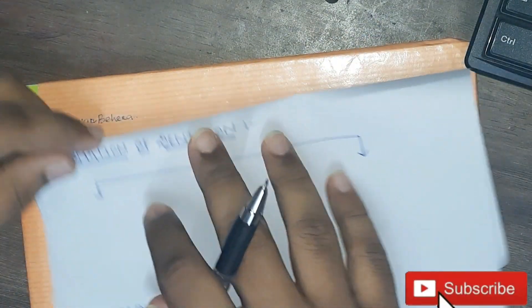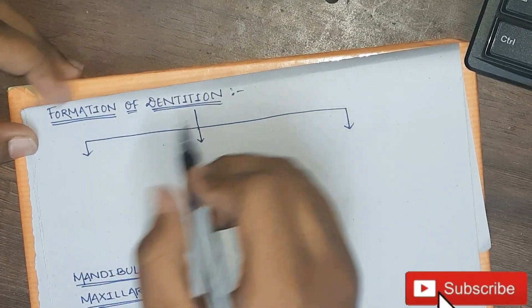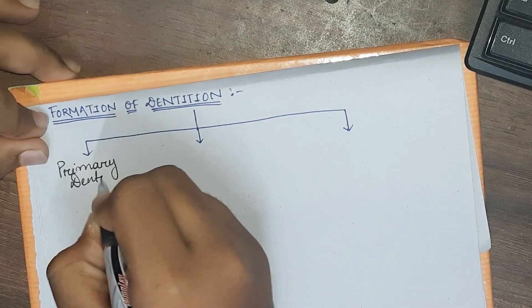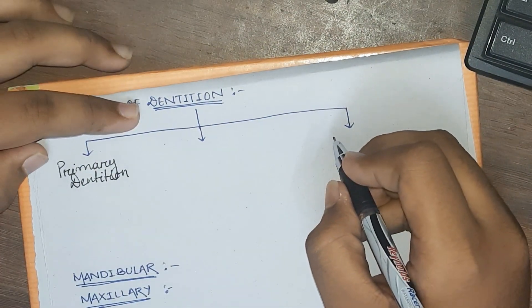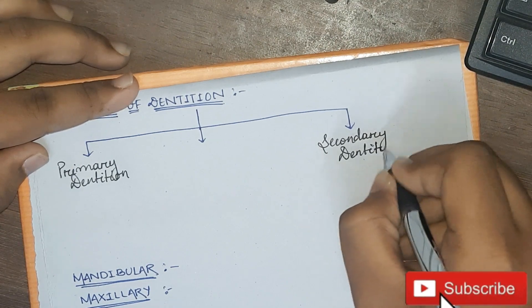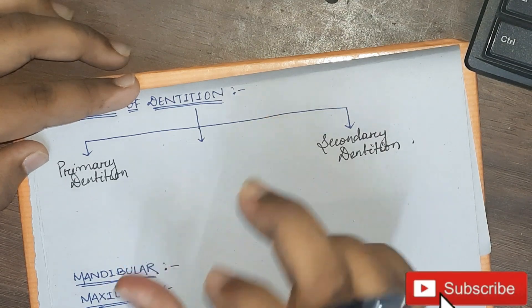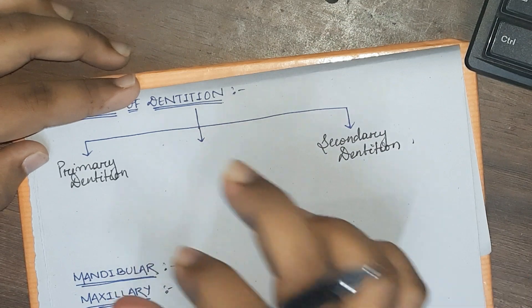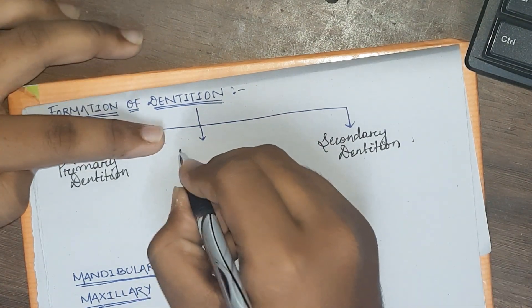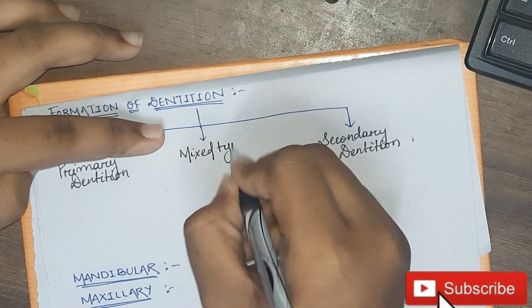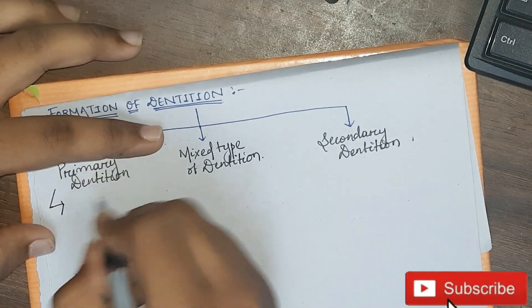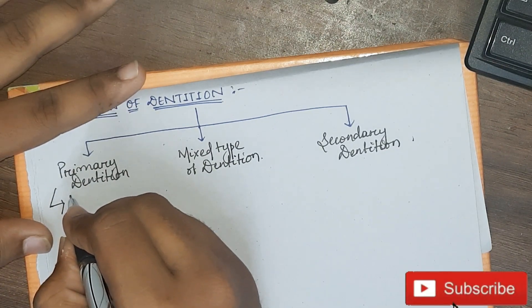Now we will see the formation of dentition. There are three types of dentition. The first is primary dentition, and the second is secondary dentition. These two are the most important. In between, for the age group of 6 to 12 years, there is the presence of both types — deciduous teeth as well as permanent teeth — so it is known as mixed dentition. Primary dentition is also known as milk teeth dentition or deciduous teeth dentition.